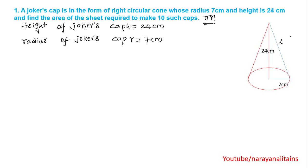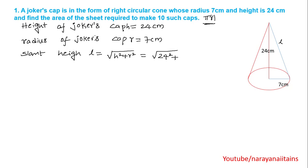Slant height formula: L = √(h² + r²). Here h² means 24² plus r² means 7². That is √(576 + 49), that is √625, that is 25.